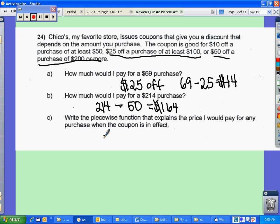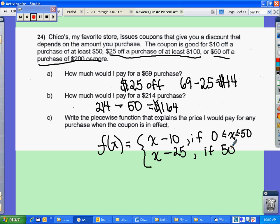And now I'm going to have to write this as a function, so f of x. Notice I have three different situations. So if I spend between $0 and $50, I'm going to take that original amount and subtract $10. If I spend between $50, not including $50, because I already included $50 over here. So $50 is less than x is less than or equal to $200. Then I'm going to get $25 off.